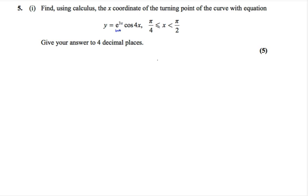We'll begin by labeling this first term, so e to the 3x as our u, and cos 4x as our v. So u equals e to the 3x, and v equals cos 4x.